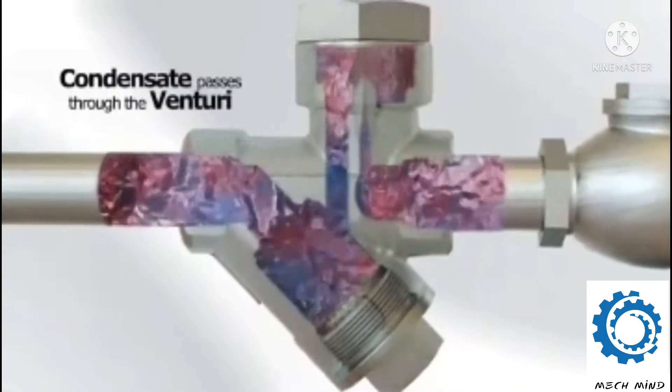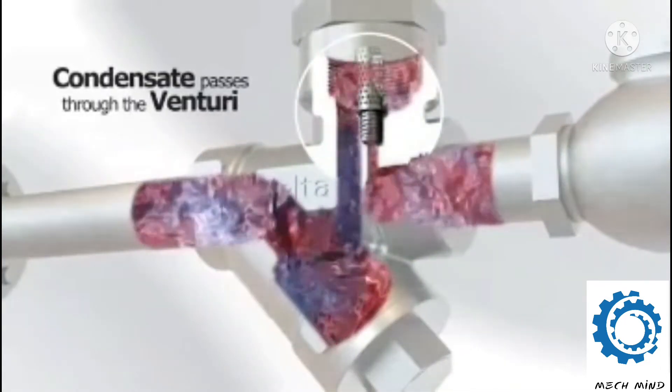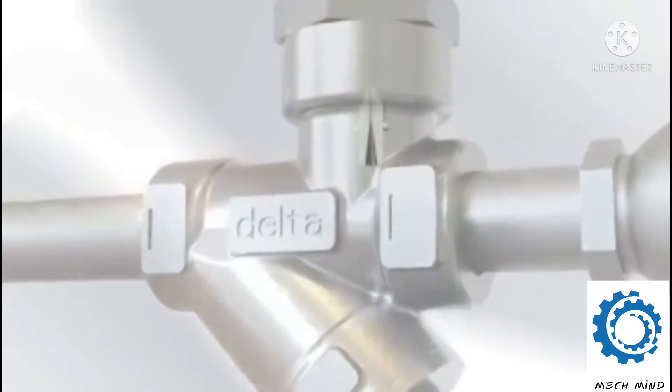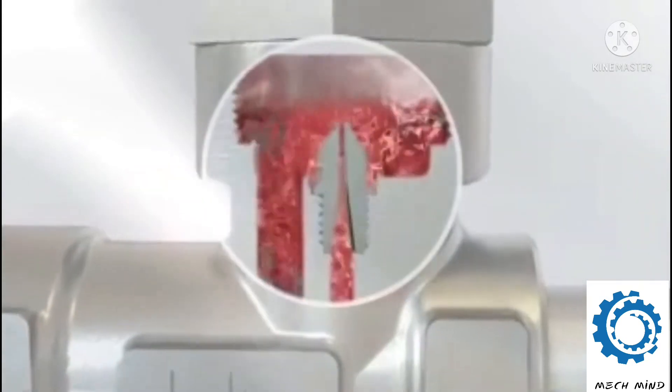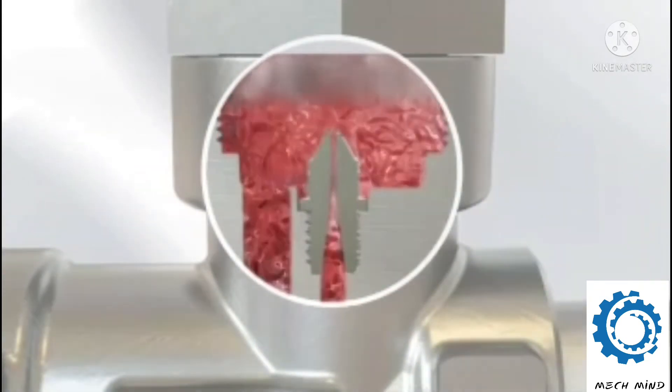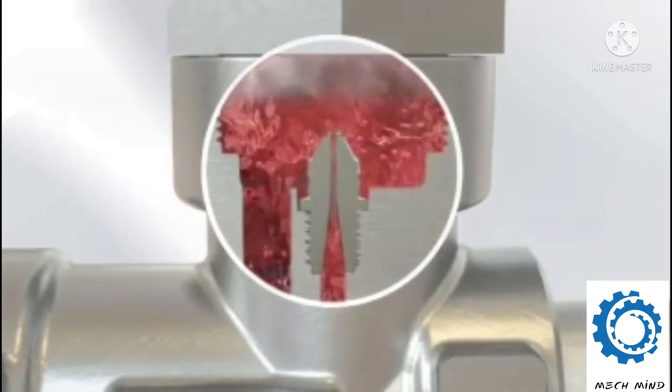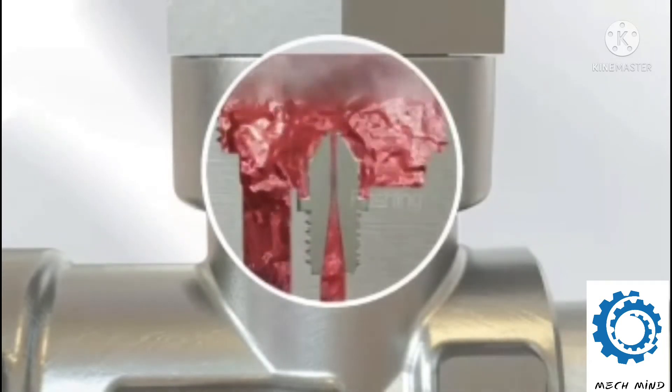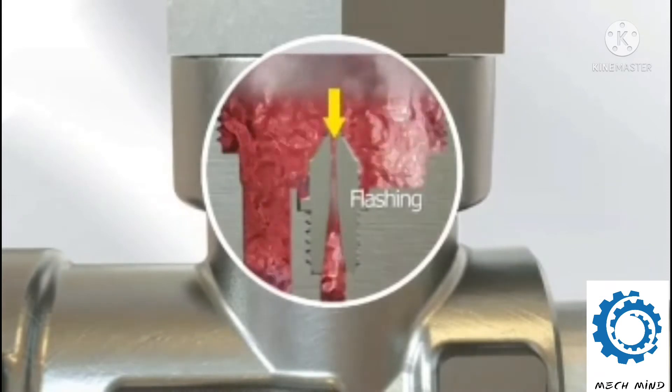This hot condensate passes through the orifice and enters the mouth of the venturi. As the condensate passes through the mouth of the venturi, there is a sudden pressure drop which causes a percentage of the hot condensate to change phase from condensate to steam, a phenomenon known as flashing.